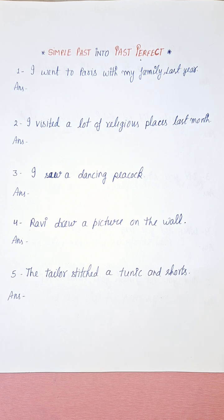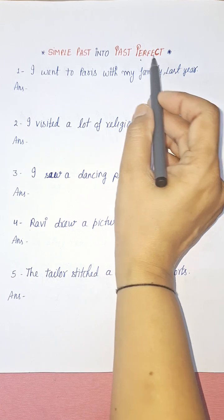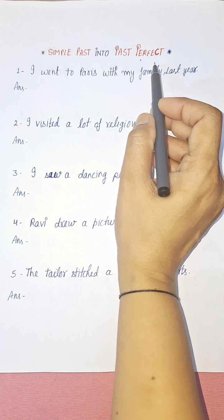Simple past also narrates something like 'once upon a time there was a king' or 'there were three bears' — that type of phrase. Now let's talk about what is past perfect tense.